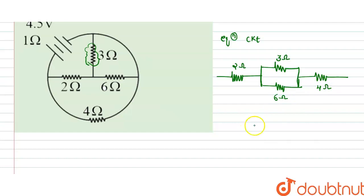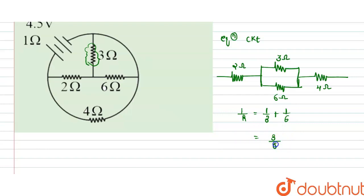From the circuit, we find the equivalent resistance of the parallel combination of 3 ohm and 6 ohm: 1/R = 1/3 + 1/6 = 3/6, so R = 6/3 = 2 ohm. This equivalent parallel resistance is called R'.